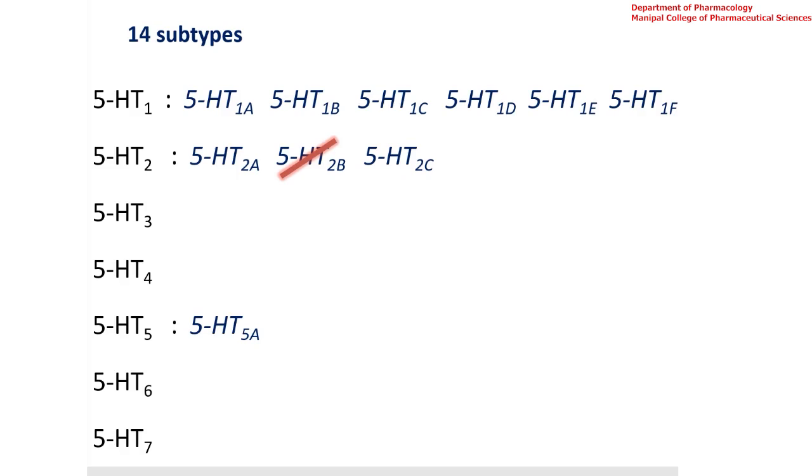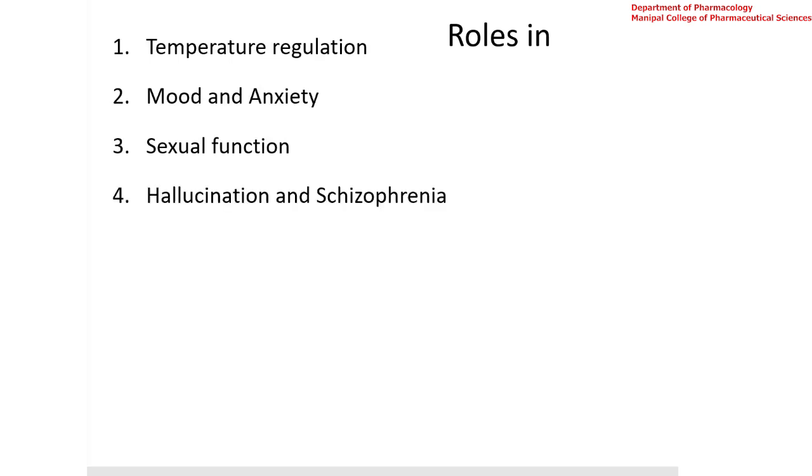Though the CNS content of serotonin is almost 1% of the total body serotonin content, it has very important roles in temperature regulation, mood and anxiety, sexual function, hallucination and schizophrenia, sleep and wakefulness, panic disorders, migraine, emesis, pain, etc.